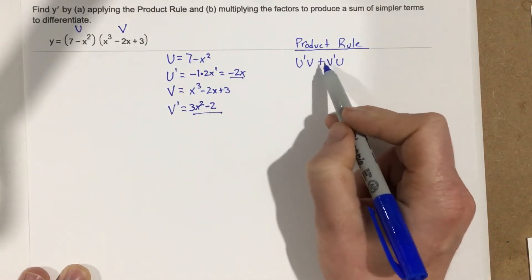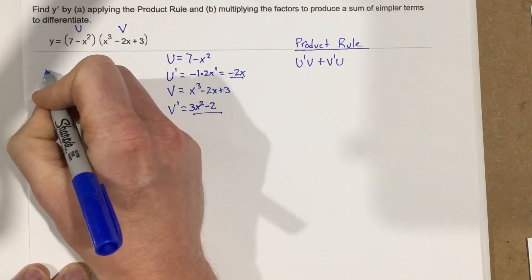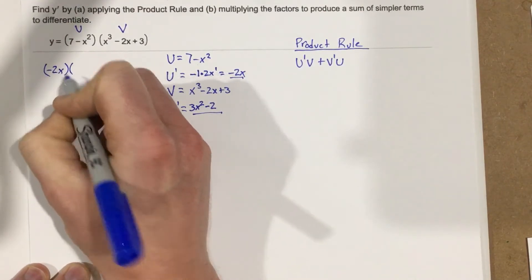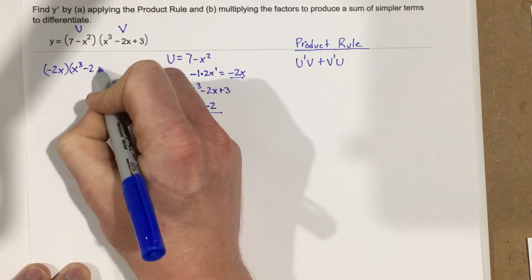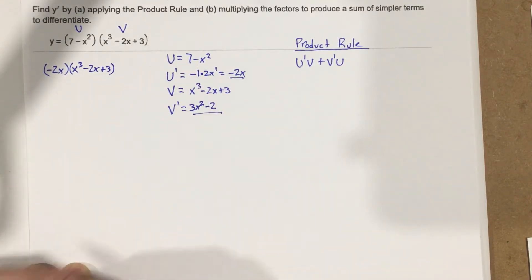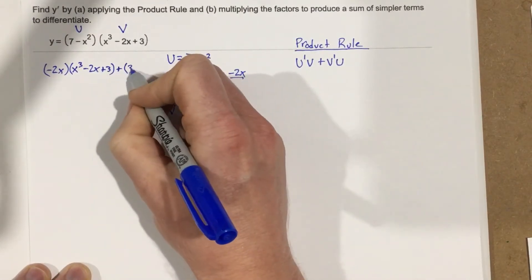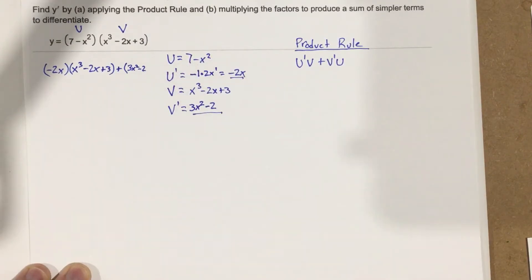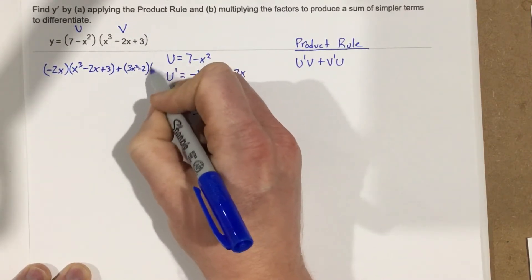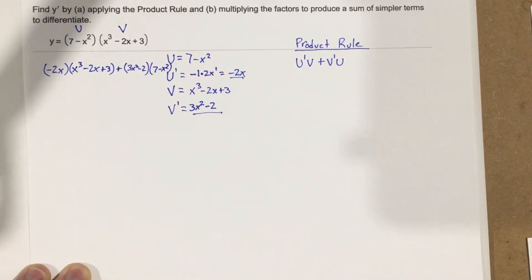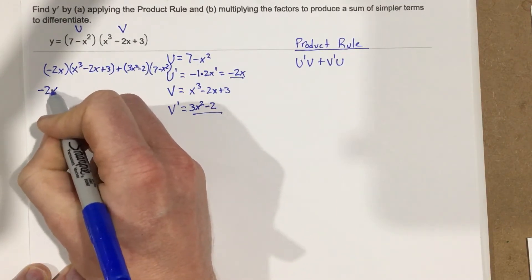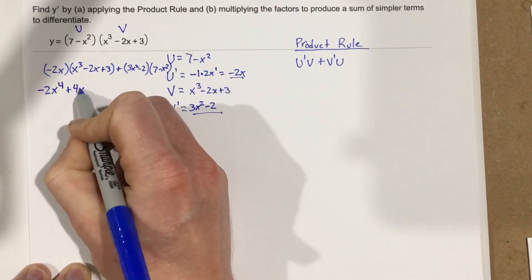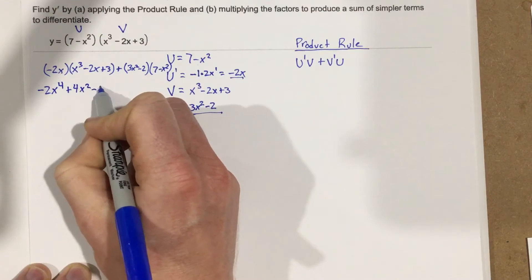Now we just follow the product rule. We start with u prime, which is negative 2x, multiplied times v, which is the original x cubed minus 2x plus 3. Then we add v prime, which is 3x squared minus 2, multiplied times u, which is 7 minus x squared. Distributing the first part gives us negative 2x to the 4th plus 4x squared minus 6x.